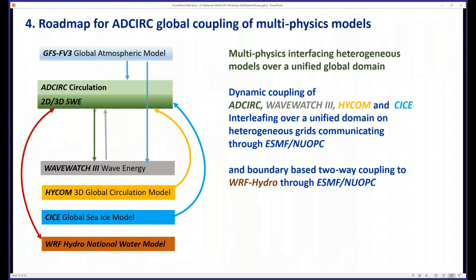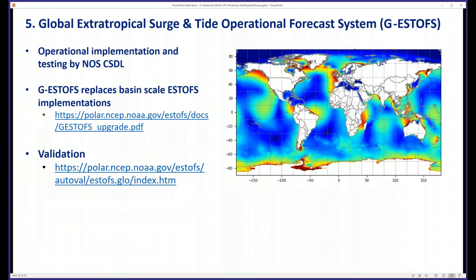To finish up, the roadmap for ADCIRC is to couple not only GFS FV3 and HICOM, but also WaveWatch 3, sea ice, and the National Water Model. Last but not least, we're going operational. The GSTOS — Global Extropical Surge and Tide Operational Forecast System — has gone through extensive testing and is very close to going operational.